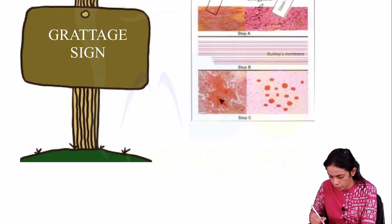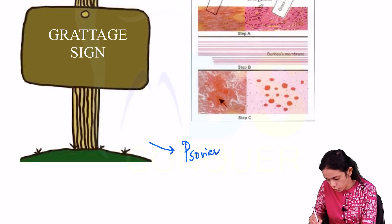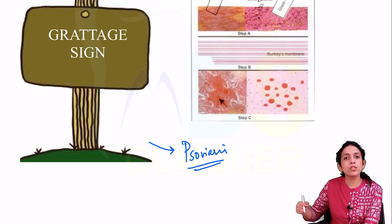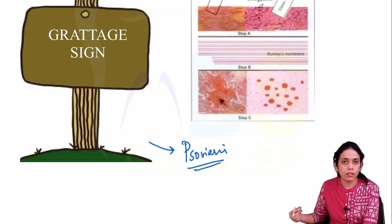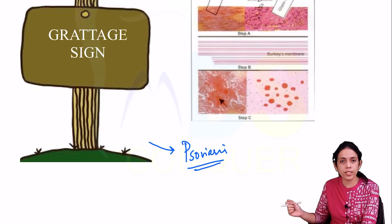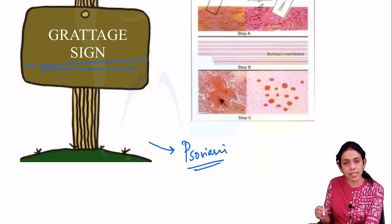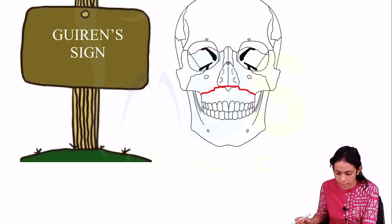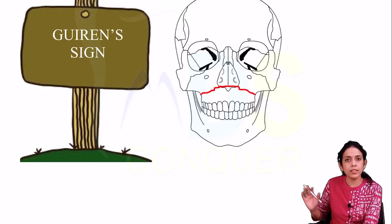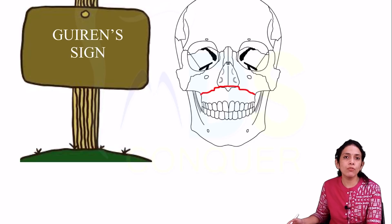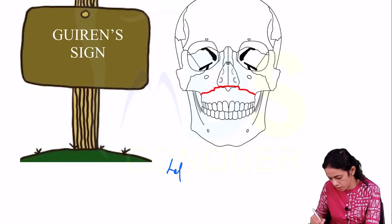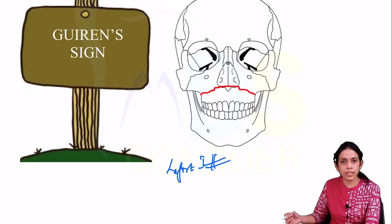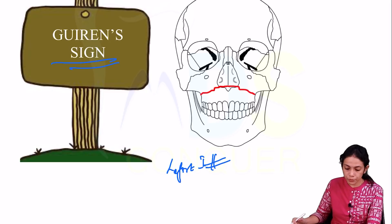Next is the Grattage sign, also seen with psoriasis. When the scales are grated with a glass slide, they become attenuated — this is the Grattage sign. Next is the Guren sign — ecchymosis seen at the greater palatine vessel area, seen following a Le Fort 1 fracture.